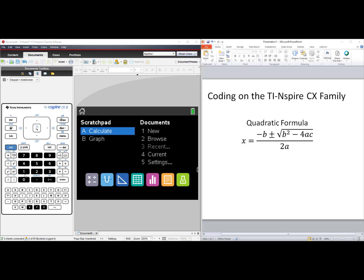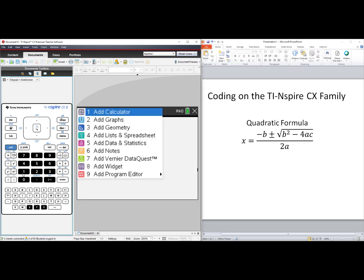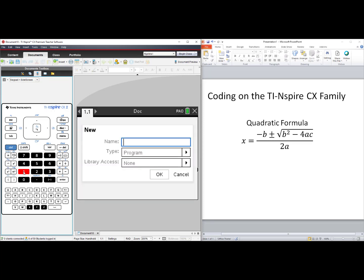Let's start by choosing number 1, New. Let's choose number 9, Add Program Editor, and then select number 1, New. We now name our code Quad Form and tab down to select OK.